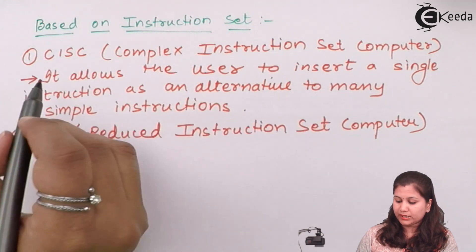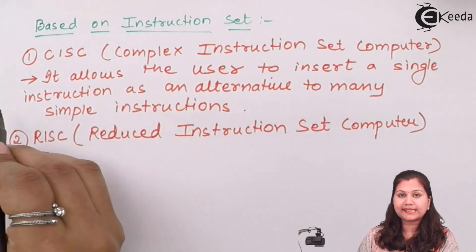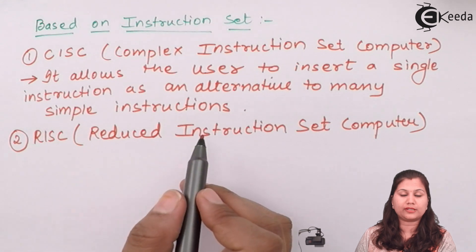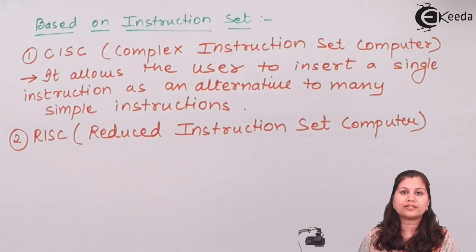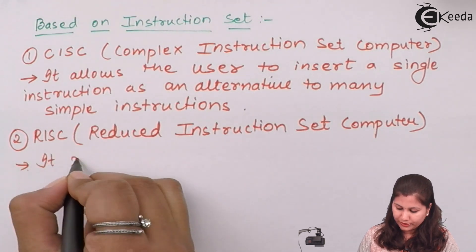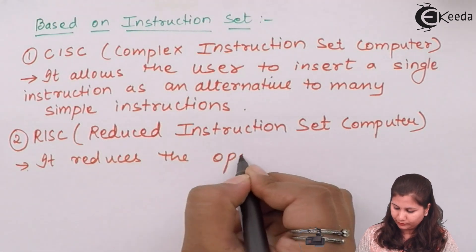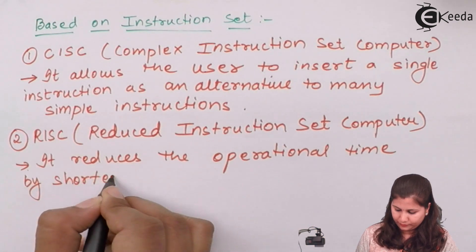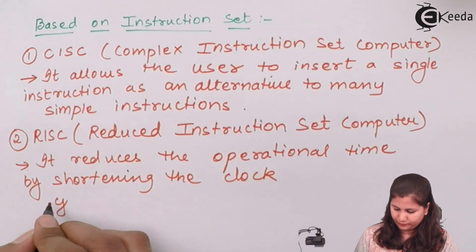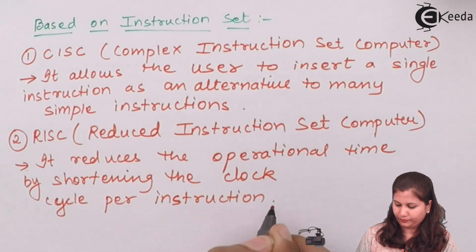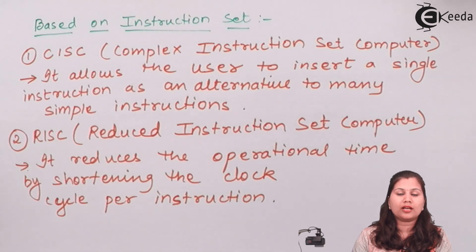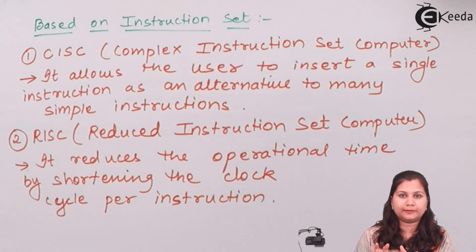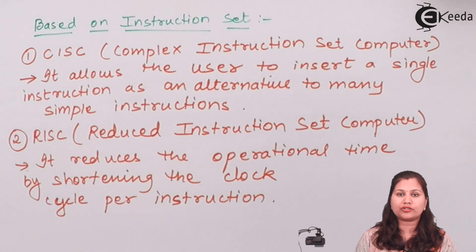In CISC computers or microcontrollers, users can insert a single instruction as an alternative to many simple instructions — instead of writing many simple instructions, one instruction replaces them, making the instruction set complex. In RISC, it reduces operational time by shortening the clock cycles per instruction, because simple instructions require fewer machine cycles to execute.